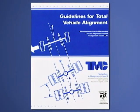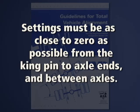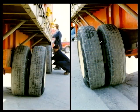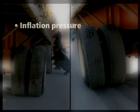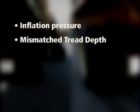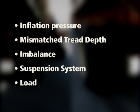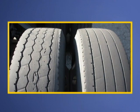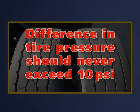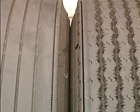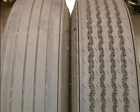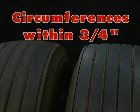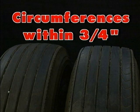Technology and Maintenance Council standards call for settings to be as close to zero as possible, from the kingpin to the axle ends and between axles. Sensitivity to irregularities related to trailer tires includes inflation pressure, mismatched tread depth on tires in a dual assembly, imbalance, suspension system, and load. Mismatched pressures in dual assemblies will create tires of different diameters, resulting in irregular wear on the smaller tire. At no time should the difference between tire pressure in dual assemblies be greater than 10 psi. When selecting tires for a dual application, they must have similar diameters, controlled by selecting tires by size, design, and tread depth. Correct diameters may be found by selecting tires with a circumference within three quarters of an inch of each other.